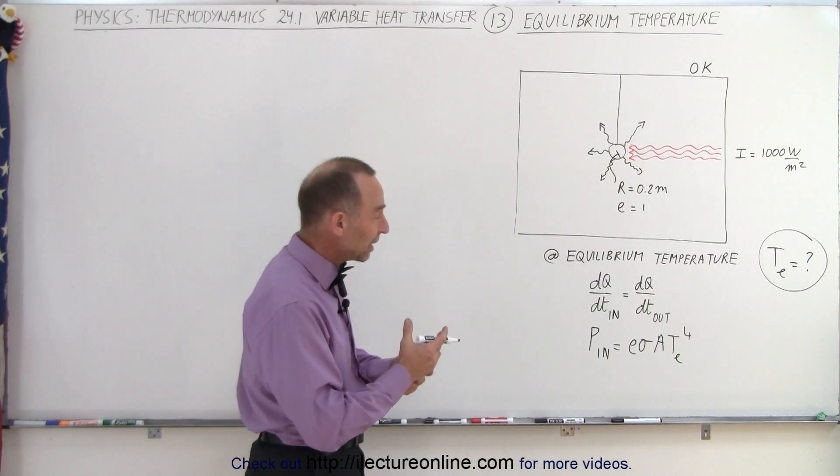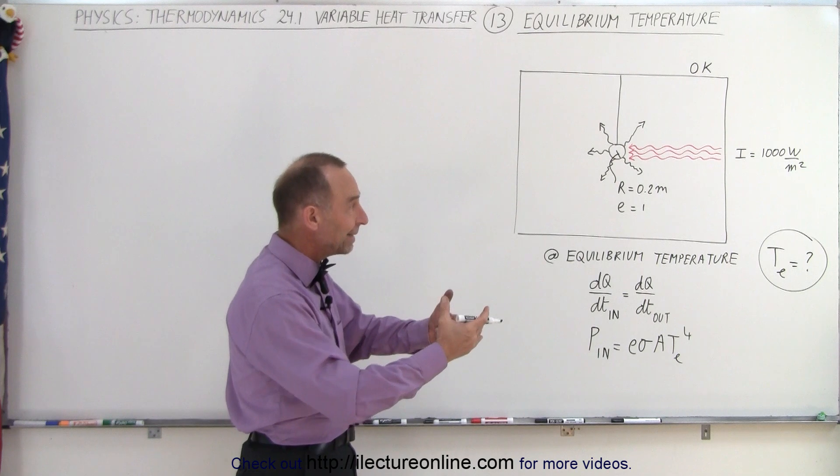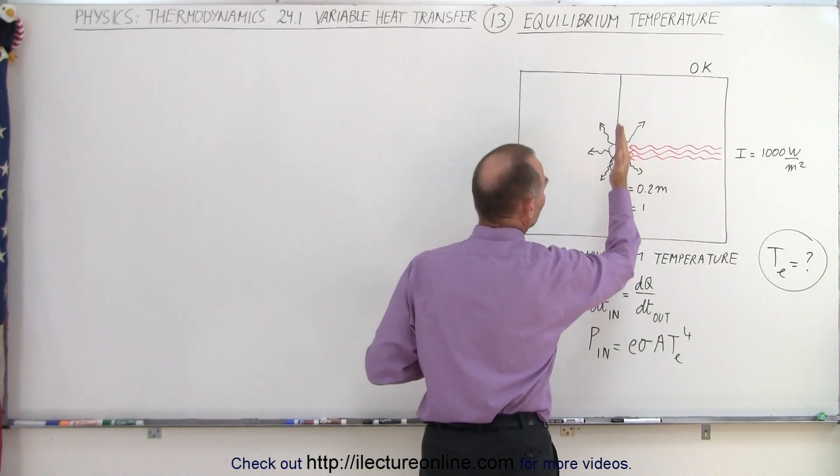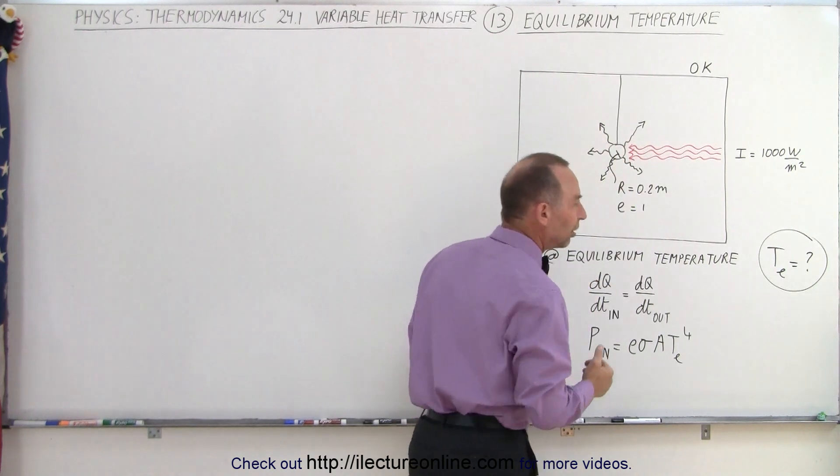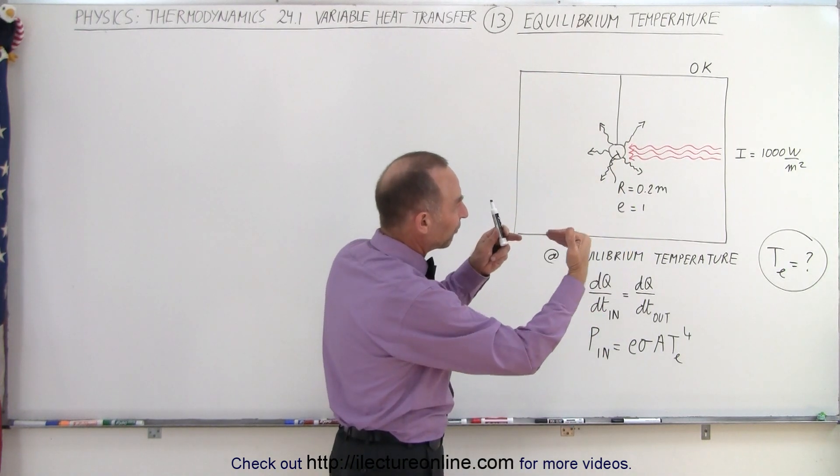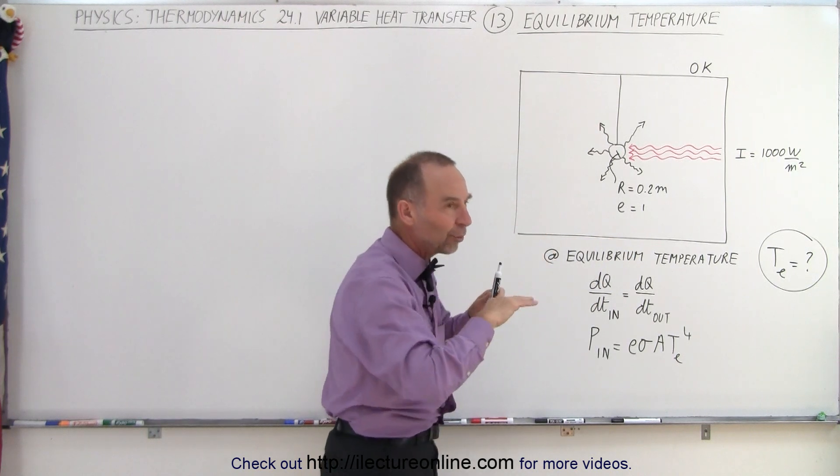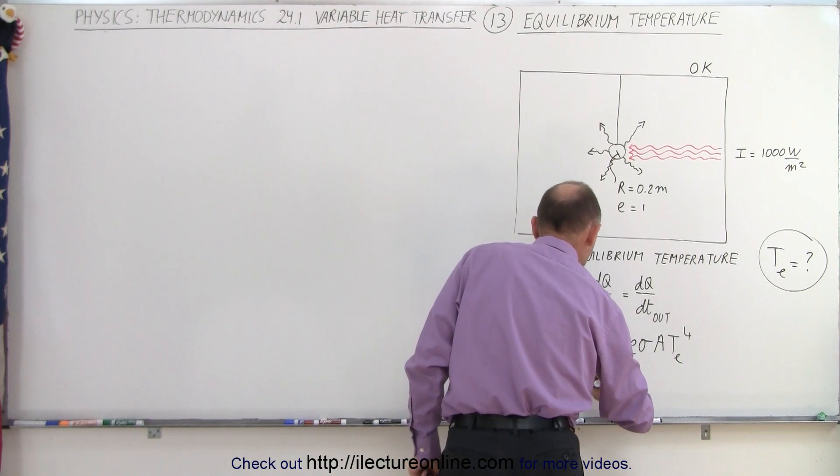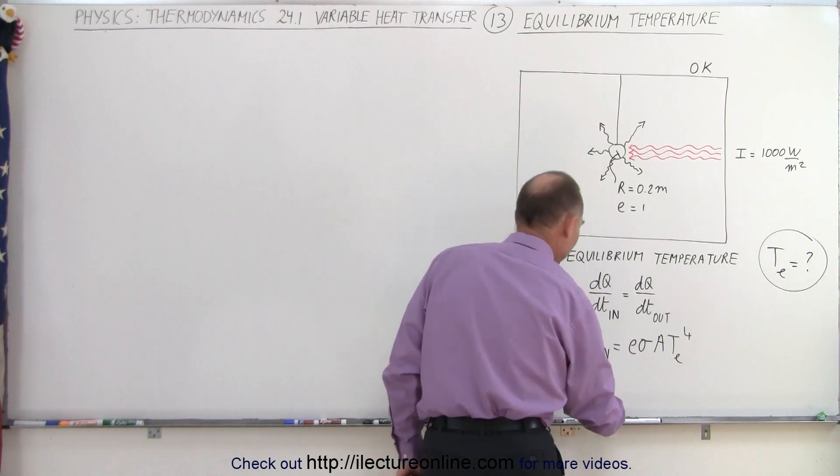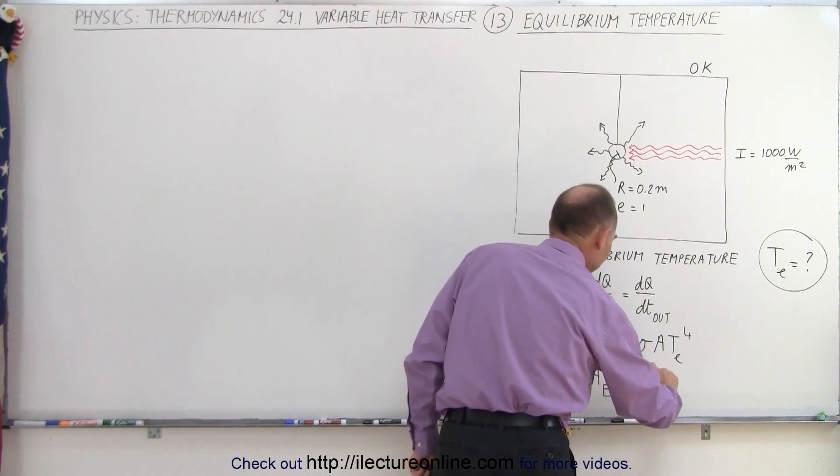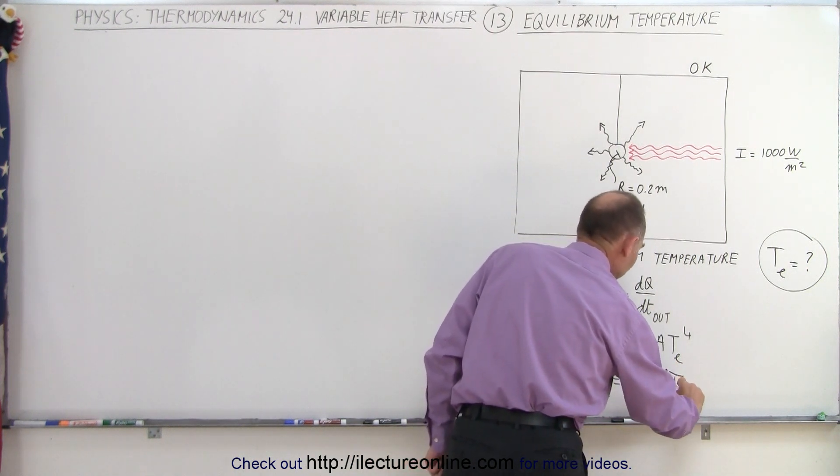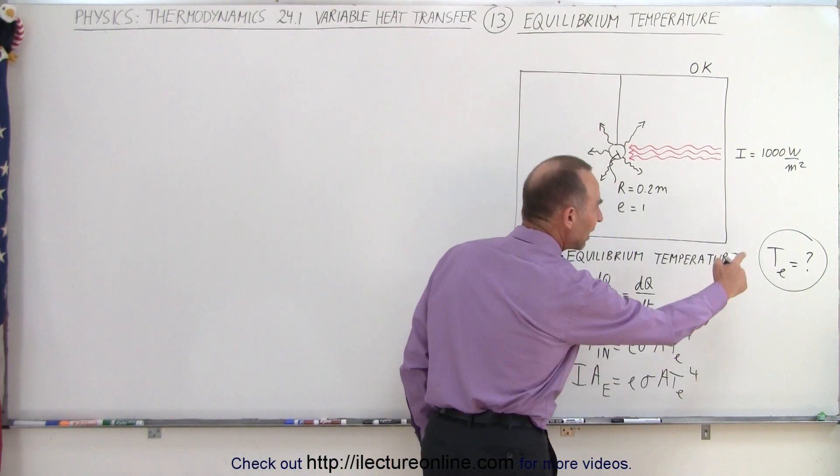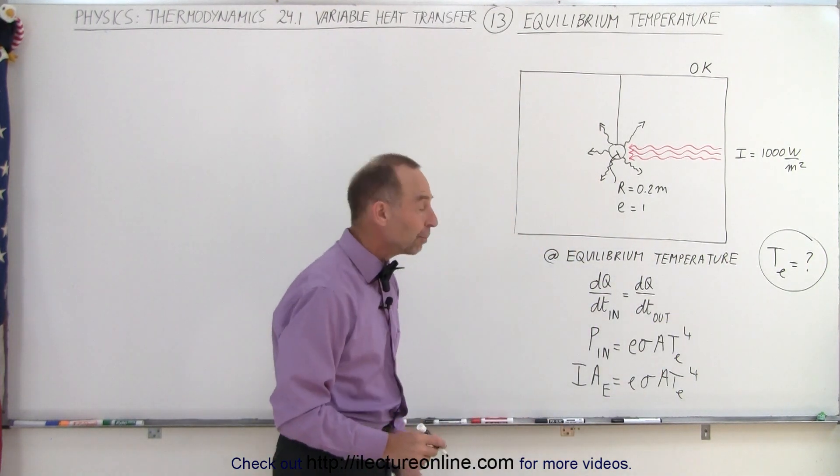The power in can be expressed in terms of the intensity times the surface area. We know that half of the sphere is being illuminated by the radiation. But at the equator, we have much more effective radiation than near the pole. So we have to come up with the effective area. It's going to be the intensity times the effective area, A sub E, equals E sigma A T sub E to the fourth power. This is the equilibrium temperature.